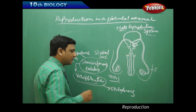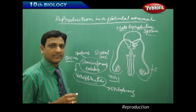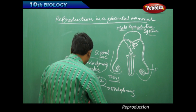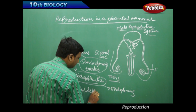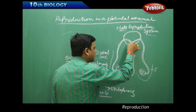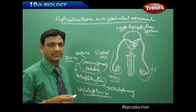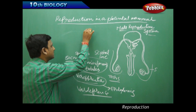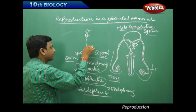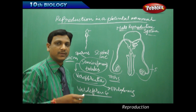The vas efferentia collect the sperm cells and form a structure called the epididymis. The sperm cells are then sent to the urethra. Sperm cells are motile — they have a head piece, a middle piece, and a flagellated tail by which they can move.